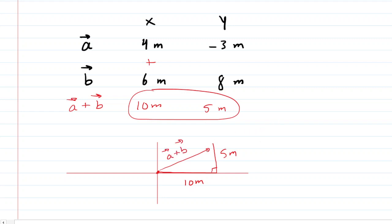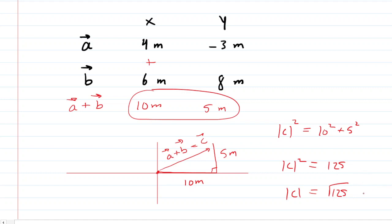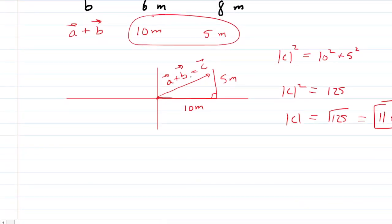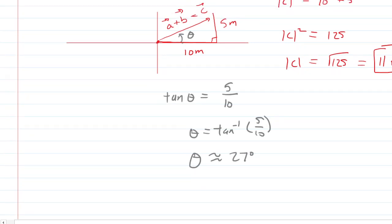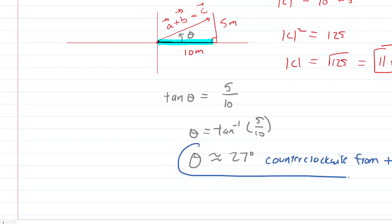Using the Pythagorean theorem again — calling this Vector C for simplicity — the magnitude of C squared equals 10 squared plus 5 squared, so the right-hand side becomes 125. Taking the square root of both sides, the magnitude is approximately 11.1 meters, or about 11 meters to two significant figures. That is the correct answer to Part E. For the angle in Part F, the tangent of theta equals the side opposite over the adjacent, so we take the inverse tangent of 5/10. Theta is approximately 27 degrees counterclockwise from the positive x-axis. That is the correct answer to Part F.